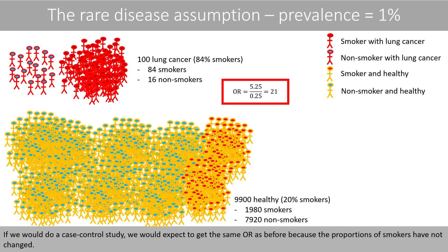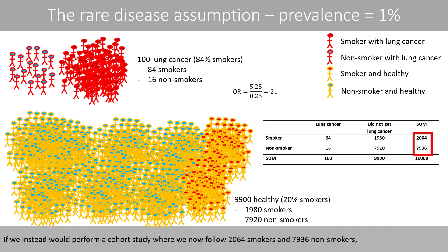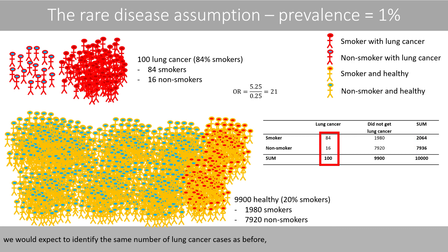If we would do a case-controlled study, we would expect to get the same odds ratio as before, because the proportions of smokers have not changed. If we instead would perform a cohort study where we now follow 2,064 smokers and 7,936 non-smokers, we would expect to identify the same number of lung cancer cases as before.